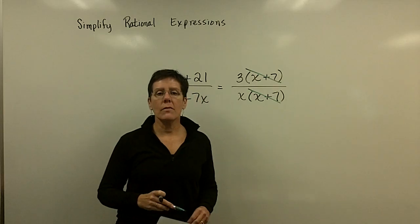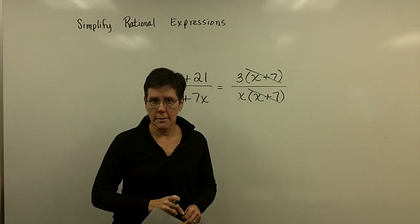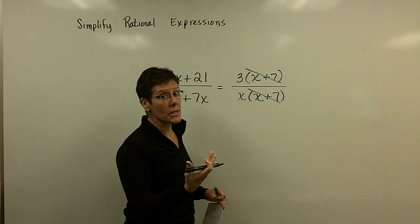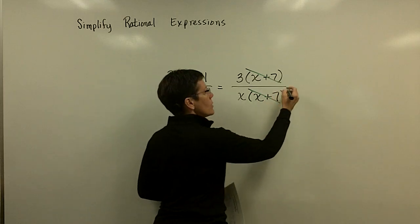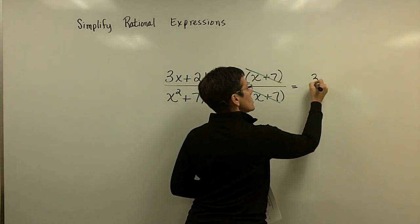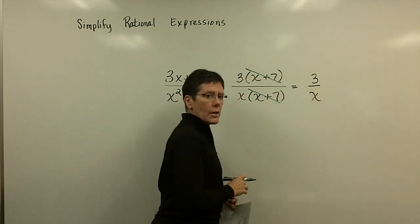x plus 7 over x plus 7 is equal to the number 1. So all I am doing is reducing 1 out of this, and my final answer to this problem is 3 over x.